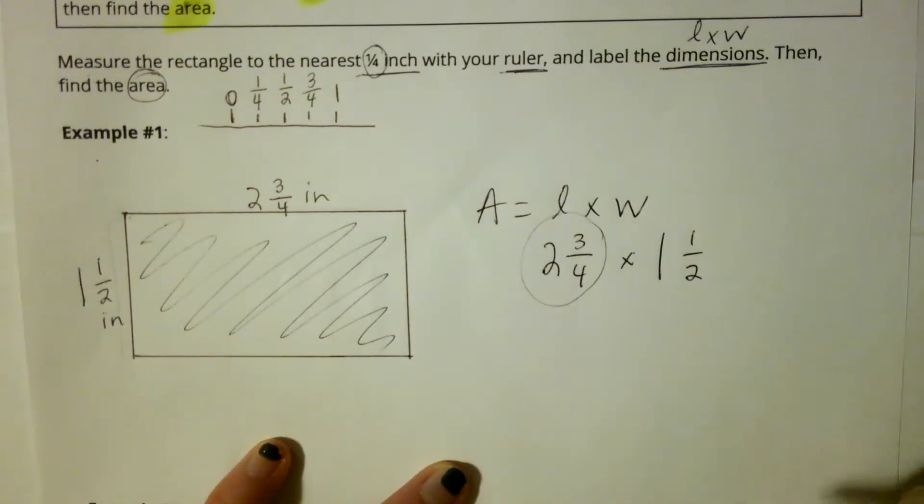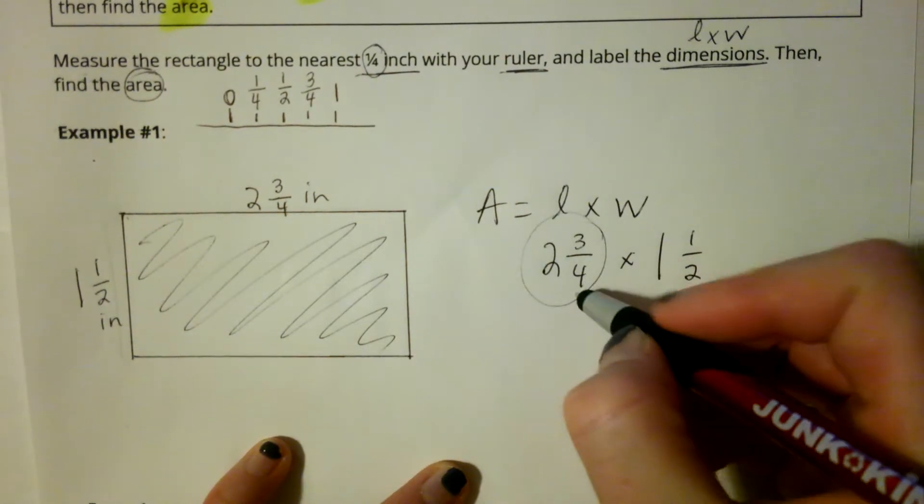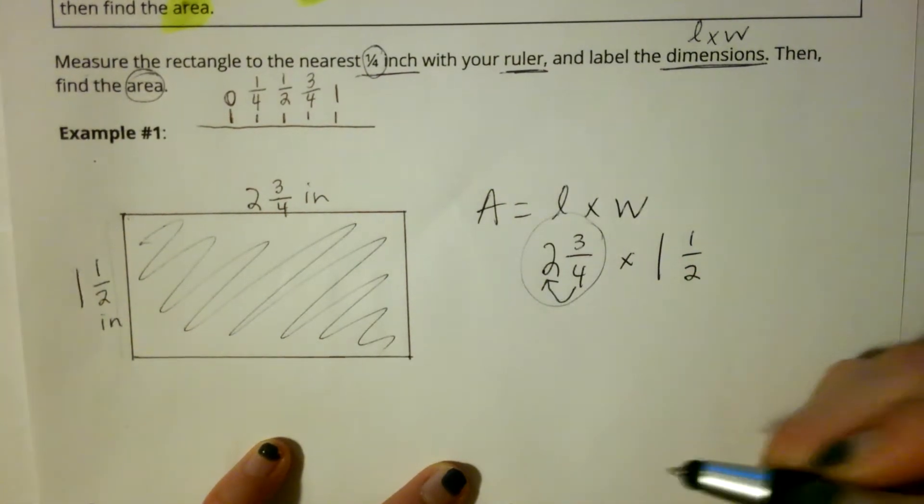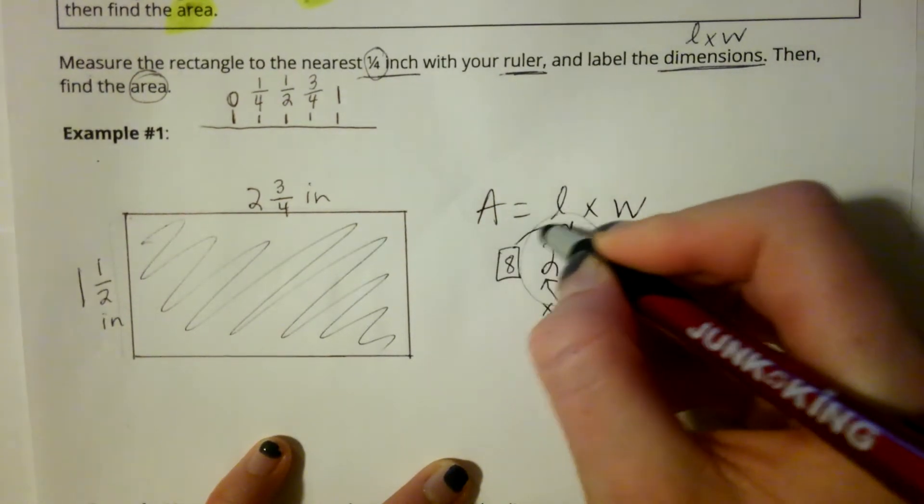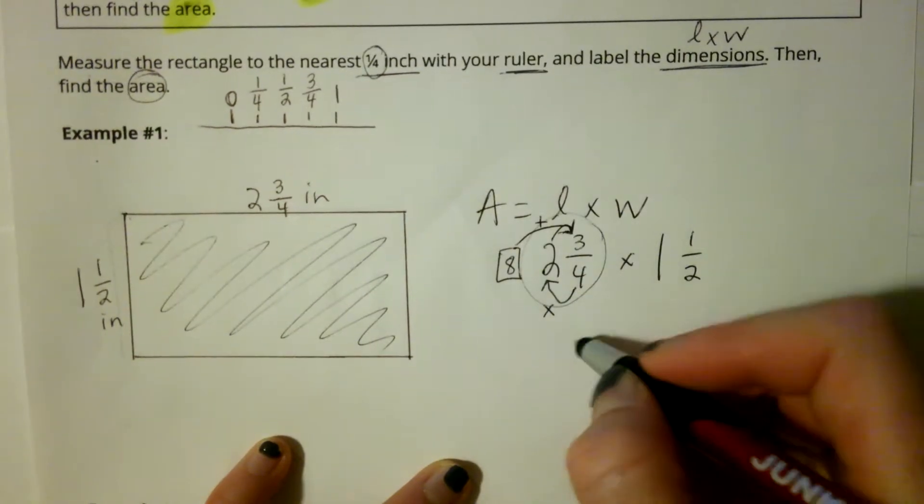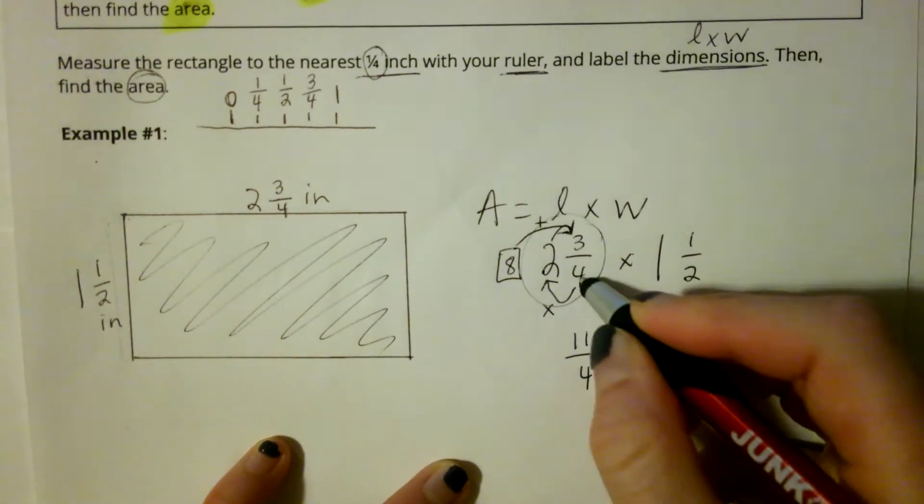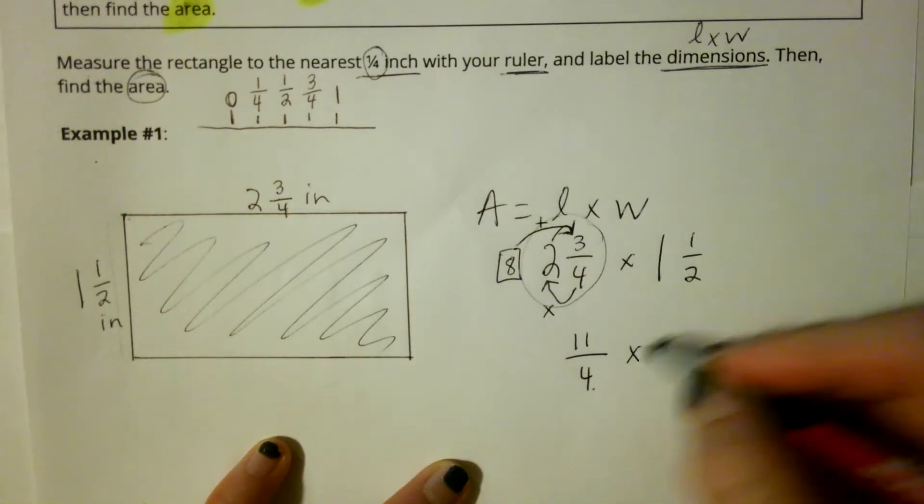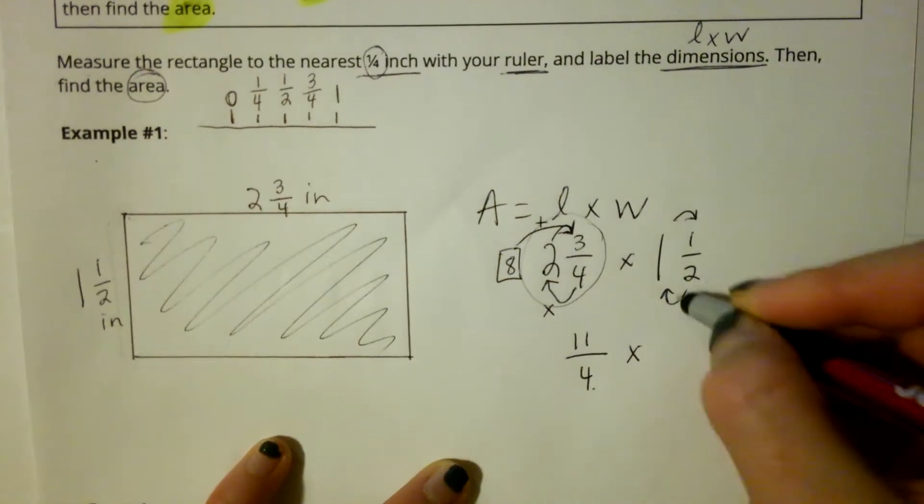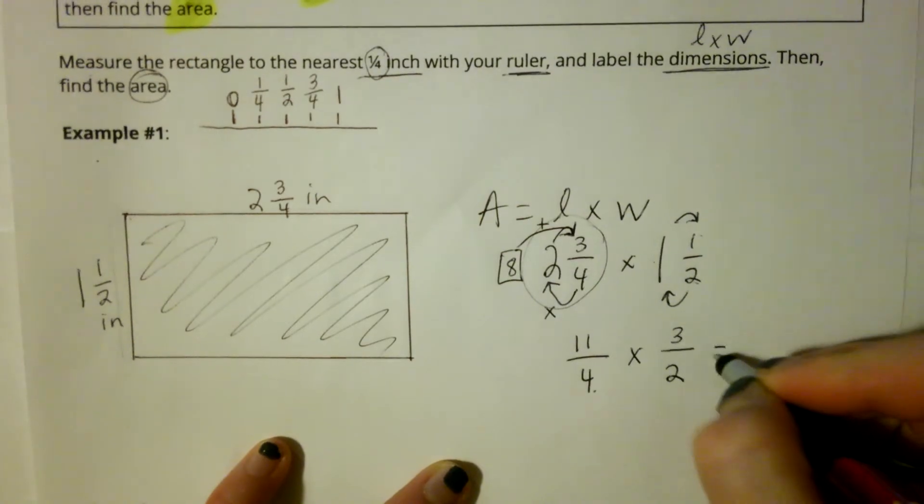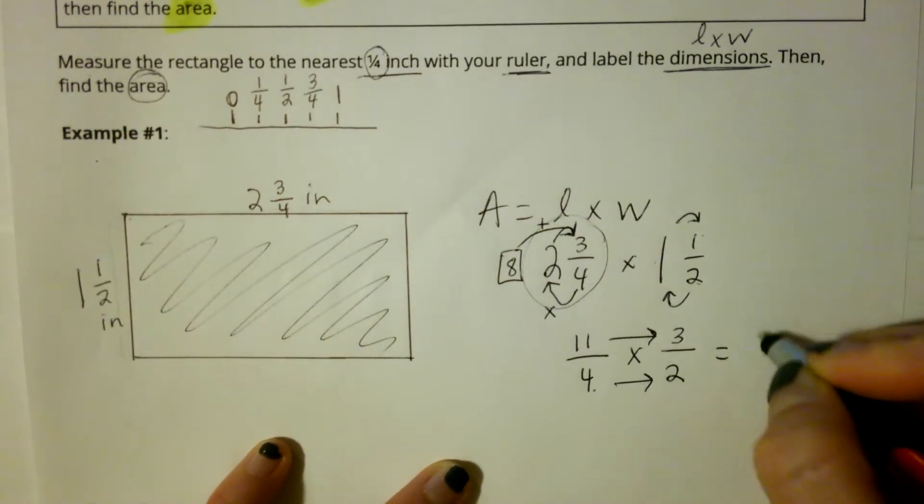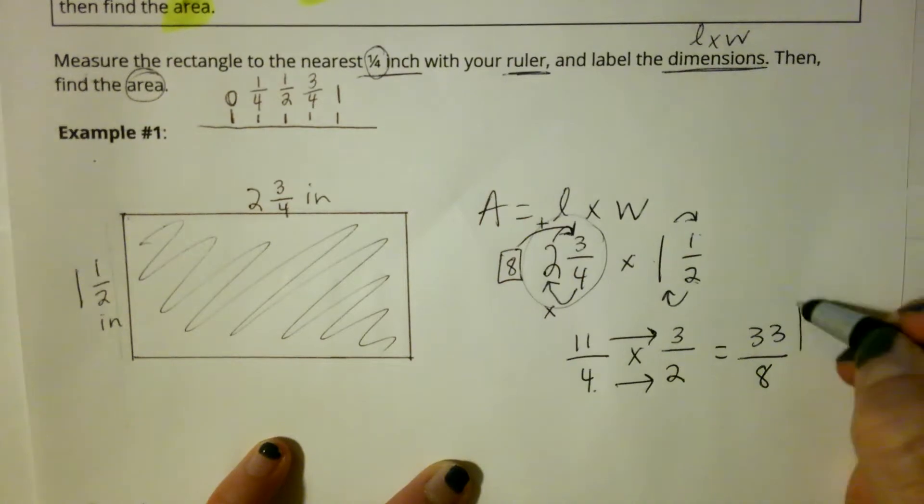If I see a mixed number, step one, my advice for you is that we turn this into an improper fraction. I'm going to say four times two gives me eight, and eight plus three gives me eleven. I keep my denominator the same. I'm going to do the same thing over here. Two times one is two, plus one is three. When I multiply fractions, I multiply straight across. So I get 33 eighths.